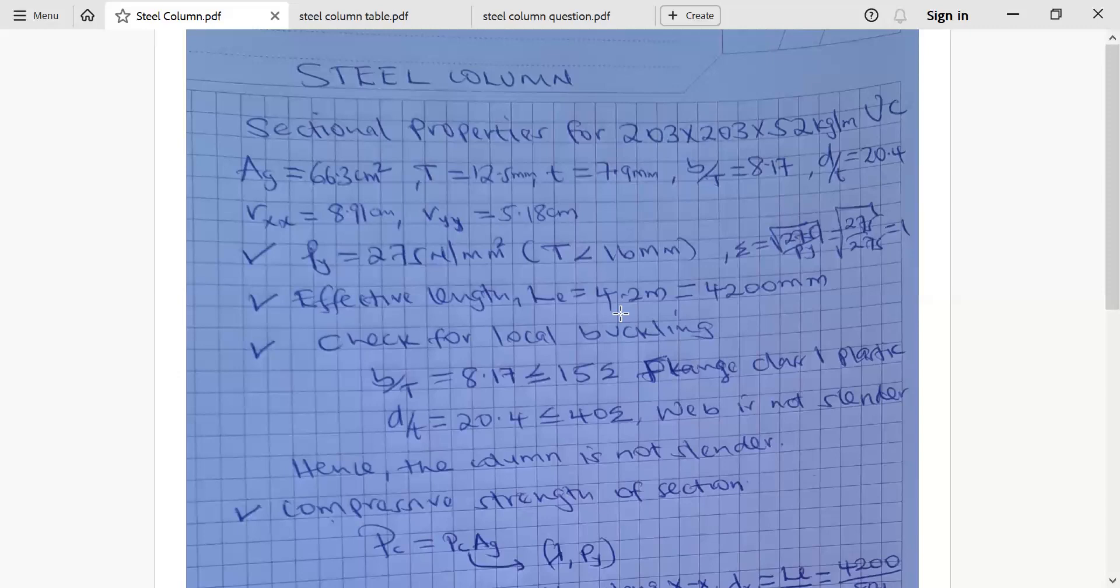From there, we check for local buckling. For local buckling, we look at ratio B over T and ratio D over T. The B over T ratio from the table is 8.17 and the limiting value is less or equal to 15 epsilon naught. And you find that our B over T ratio is below that, which means our flange is class 1 plastic.